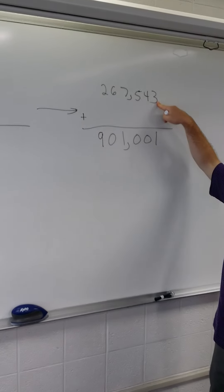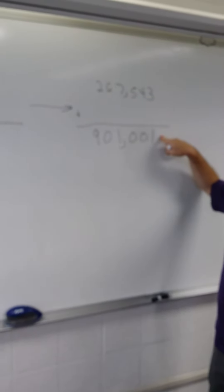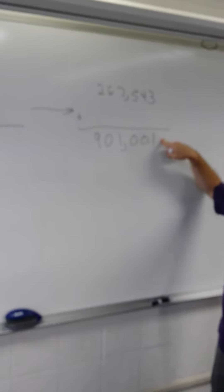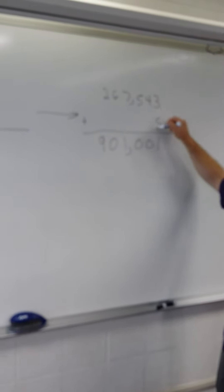And now, what do you add to 3 to get to 11, Joslin? You add 8. Since that's 11, we carry our 10.